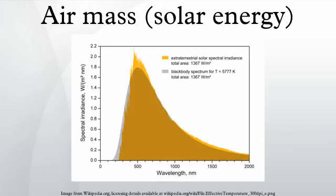The air mass coefficient defines the direct optical path length through the Earth's atmosphere, expressed as a ratio relative to the path length vertically upwards, that is at the zenith. The air mass coefficient can be used to help characterize the solar spectrum after solar radiation has traveled through the atmosphere. The air mass coefficient is commonly used to characterize the performance of solar cells under standardized conditions, and is often referred to using the syntax AM followed by a number. AM1.5 is almost universal when characterizing terrestrial power generating panels.